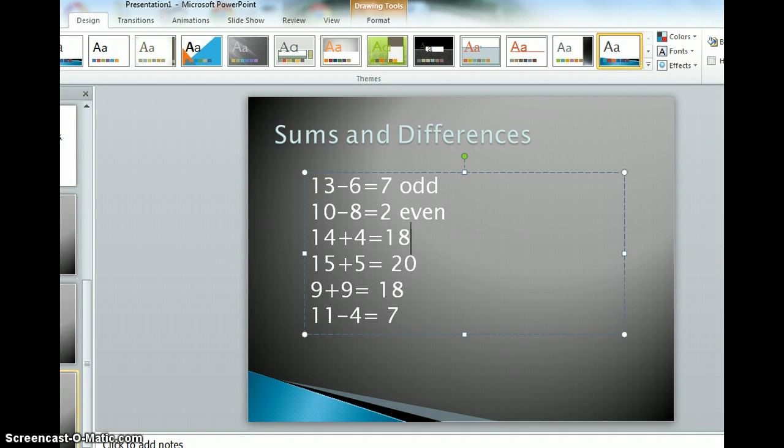14 plus 4 is 18. 18 is an even number. 15 plus 5 is 20. That's also an even number. 9 plus 9 is 18. That's an even number. And 11 take away 4 is 7.